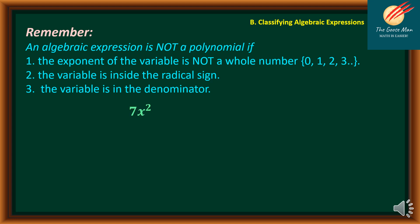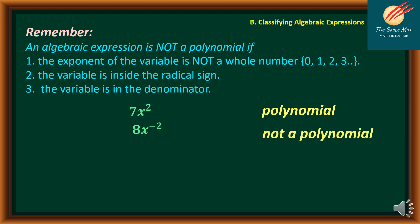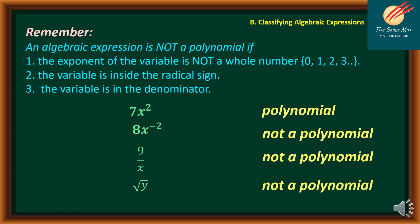For example, 7x squared is a polynomial. However, 8x raised to negative 2 is not a polynomial because the exponent is negative. Also, 9 over x is not a polynomial because the variable is in the denominator — and if we express x in exponential form, the exponent is negative. Likewise, the square root of y is not a polynomial because the variable is inside the radical sign.